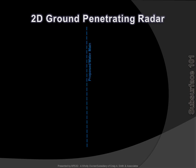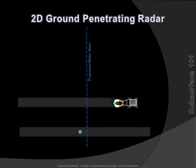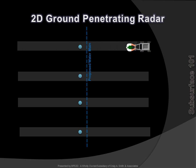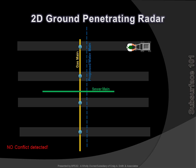Let's say the proposed water main runs a different way. The same 2D scanning methods are utilized. The gas main is detected, like the previous example, and appears not to conflict. The sewer main is again missed. And, due to the grid spacing, an offset in the gas main is also missed. Now there are 3 potential conflicts that were all missed by traditional SUE methodologies.